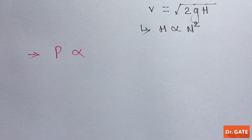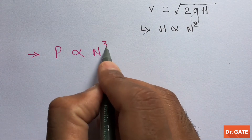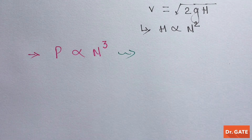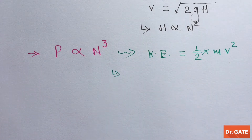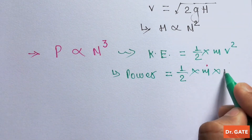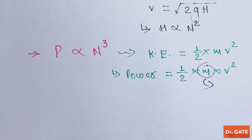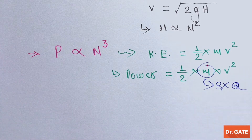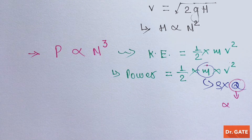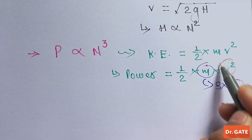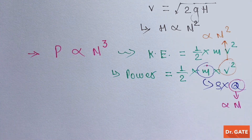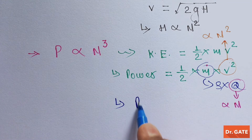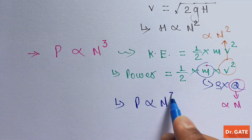And power is directly proportional to the cube of rotational speed. We know that the expression for kinetic energy gives us power equal to half m-dot v-squared, where m-dot is the mass flow rate, which equals density times discharge. Since discharge is directly proportional to N and v-squared is directly proportional to N-squared, we conclude that power is directly proportional to N-cubed.